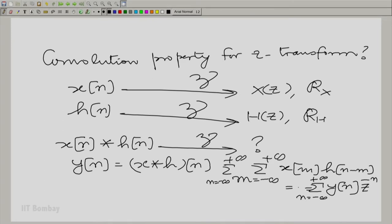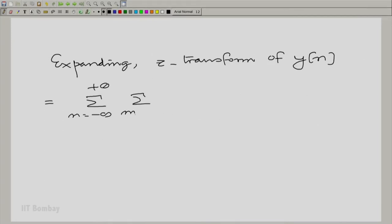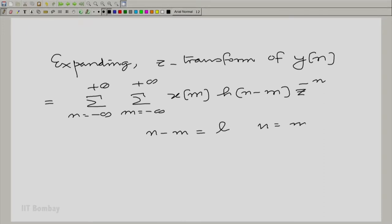As usual, we need to make a transformation of variable. So, we will keep m as it is, but we put n minus m equal to L. Thereby n becomes m plus L.